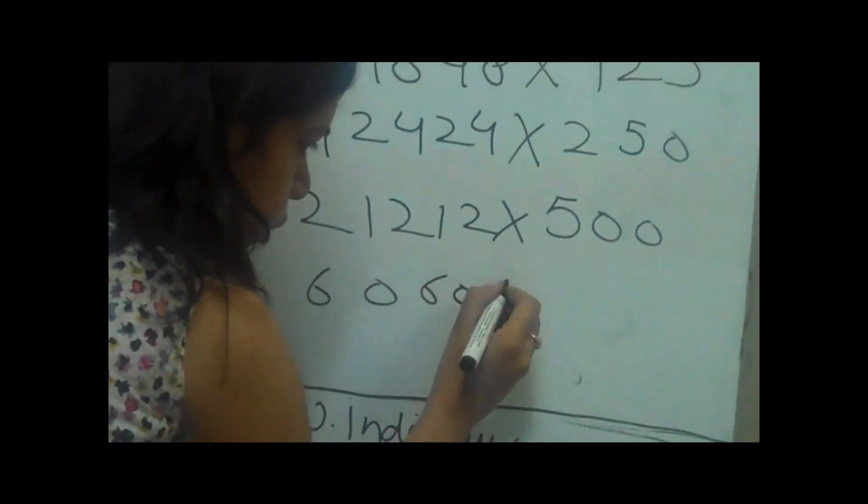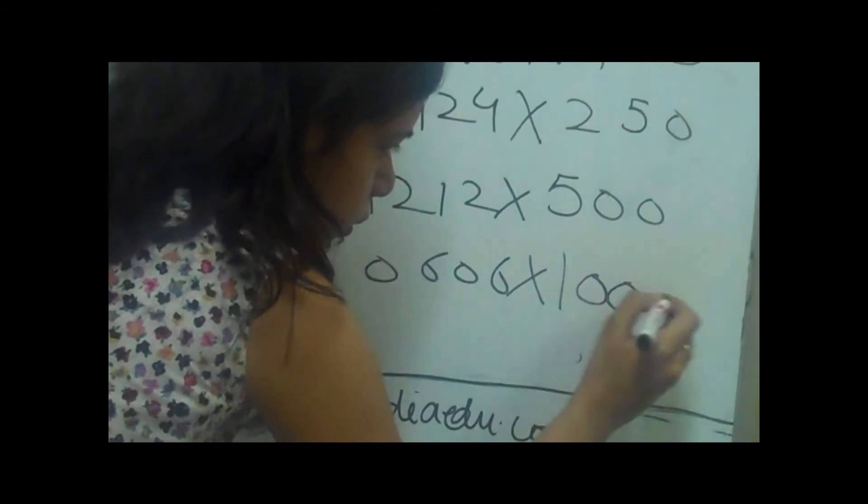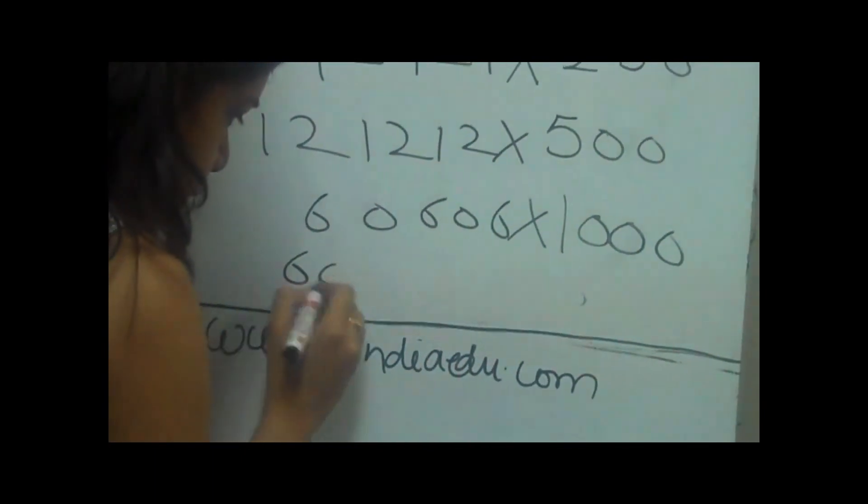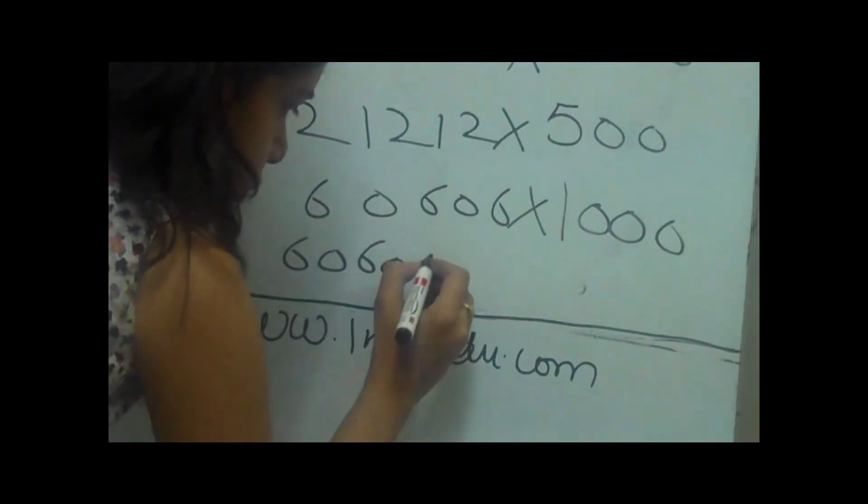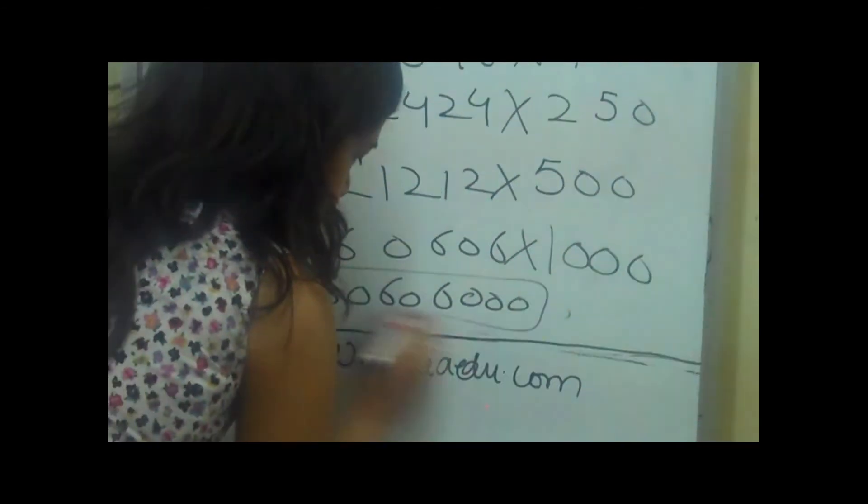And multiplying it by 2 makes 1000. And it's a simple multiplication which equals 6000, which is the answer.